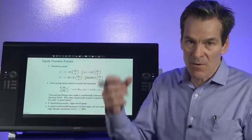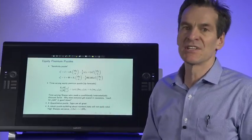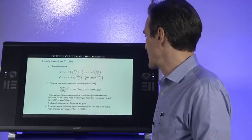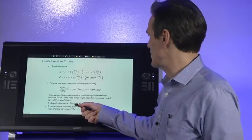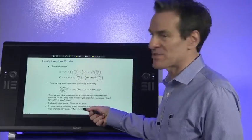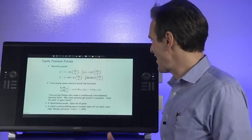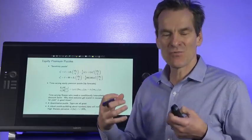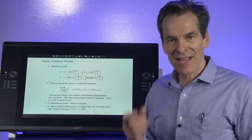We have pervasively in asset markets, high Sharpe ratios, E over sigma on the order of 0.3, 0.5, big numbers in lots and lots of different markets. We have pervasively that consumption growth is very smooth. The key observation is this consumption growth is not 20 percent like stock returns. It's about 2 percent. So our economy just doesn't look as risky as stock market premiums make it look. That's the central puzzle.